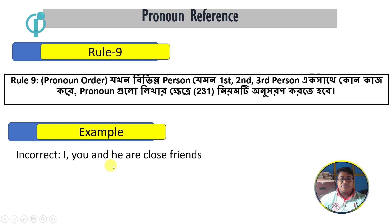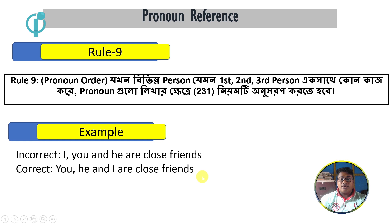First person, second person, third person. For example: 'I, you, and he are close friends.' Here 'I' is first person, 'you' is second person, and 'he' is third person.